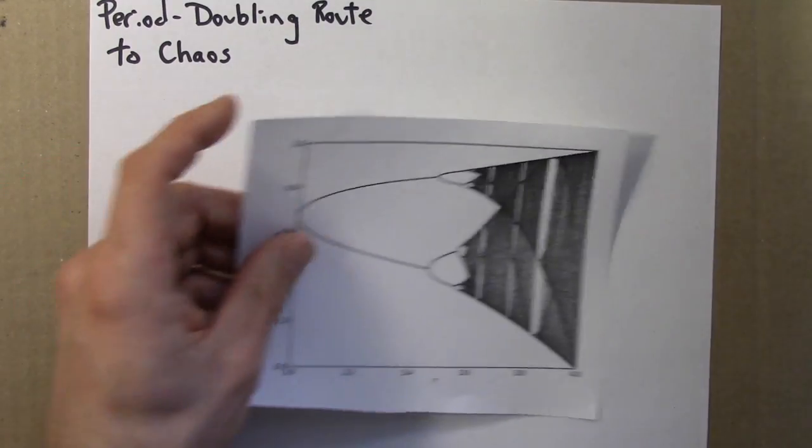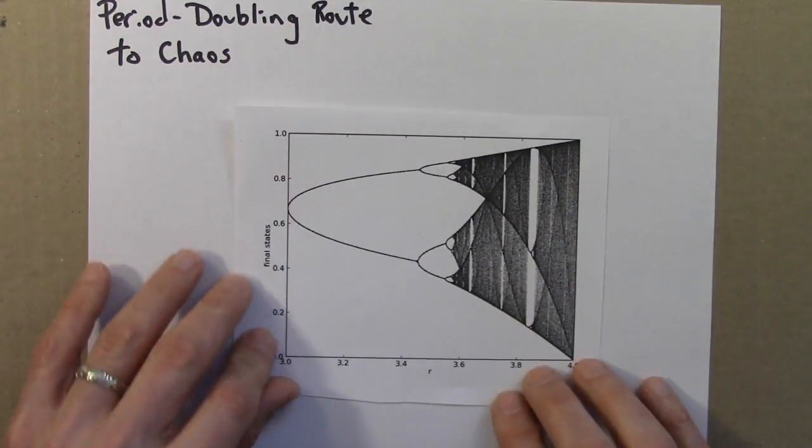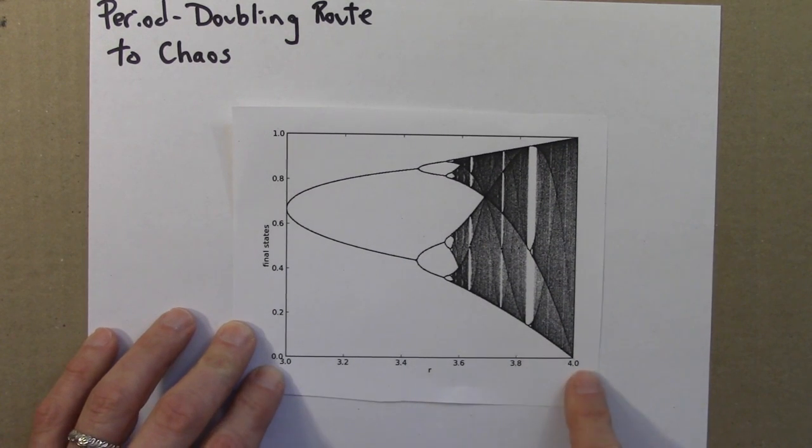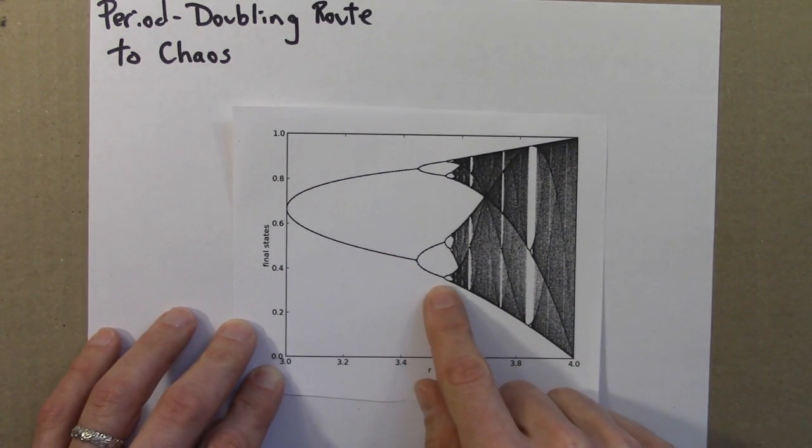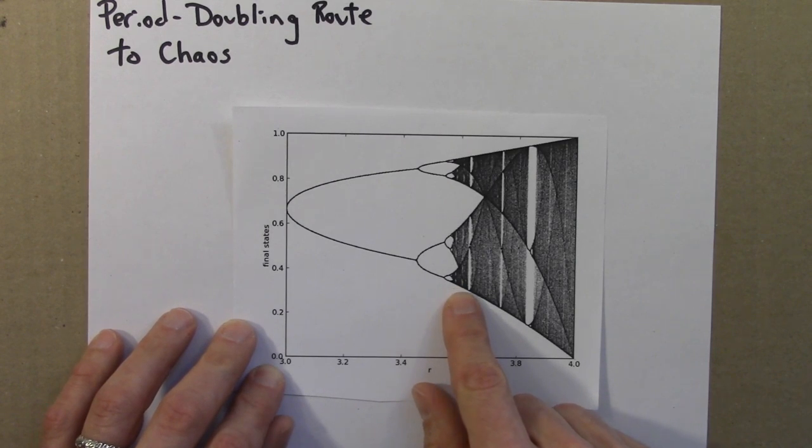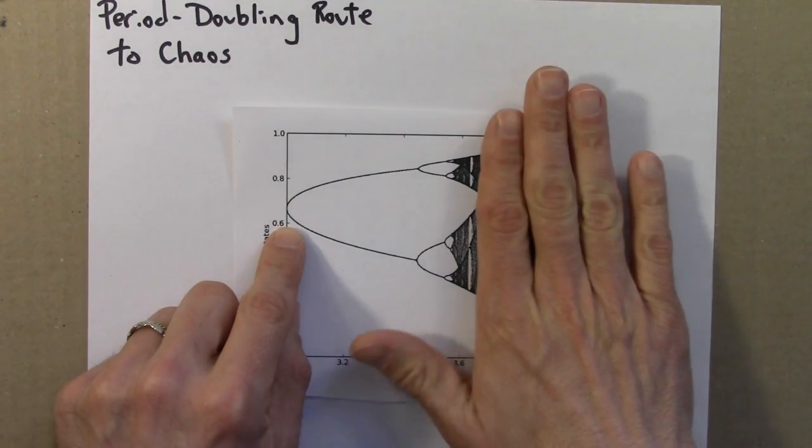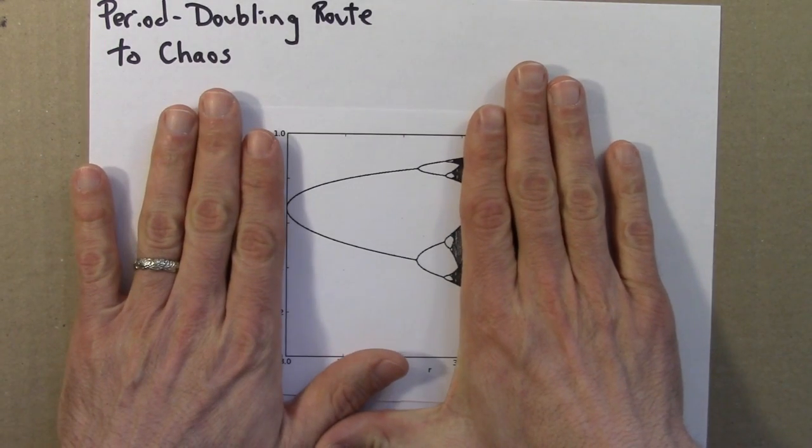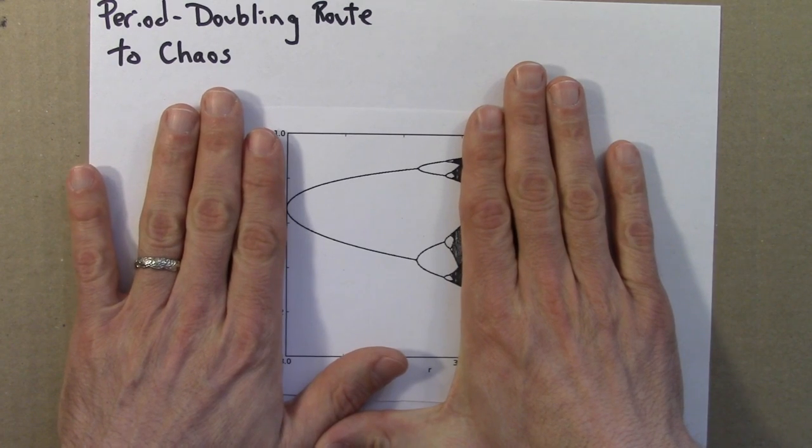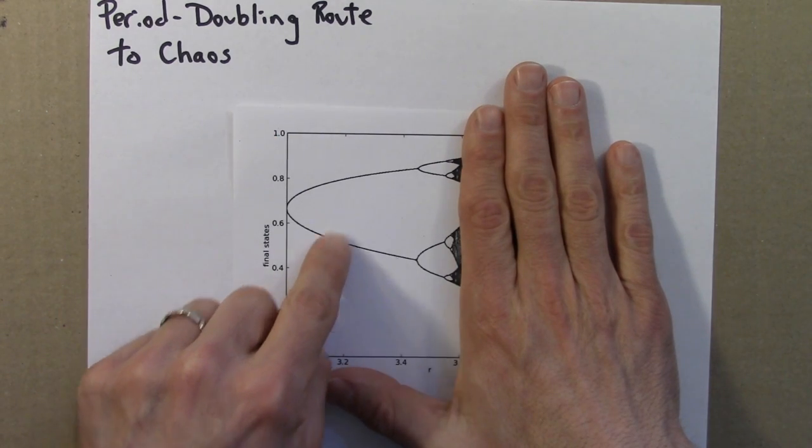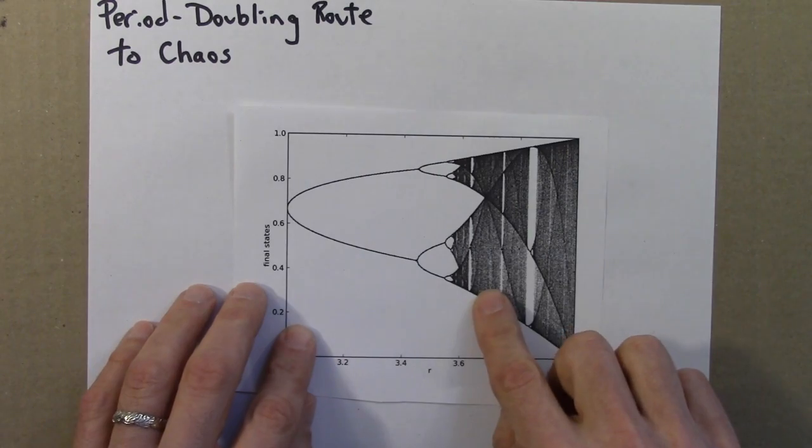Here's a closer view of that. This is from 3 to 4. Period 2 to 4 to 8, then regions of chaos, periodic windows, more chaos, and so on. And what I want to do now is focus on just this particular portion of the bifurcation diagram, where the periods double and then eventually give us chaos.